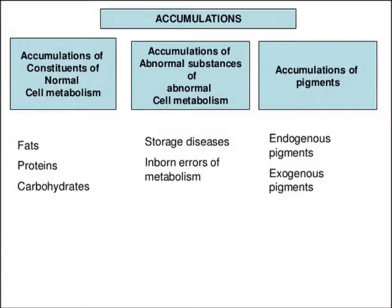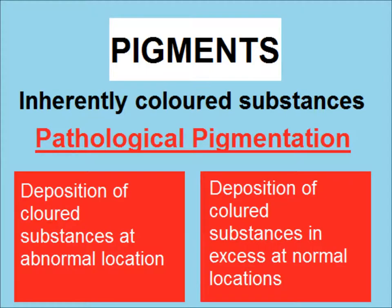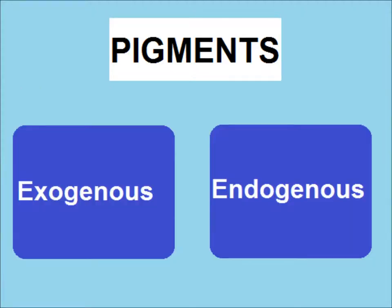Pigments are inherently colored substances. In pathological pigmentation, there is deposition of colored substances at an abnormal location, or there is deposition of colored substances in excess at normal locations.